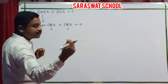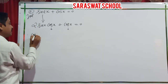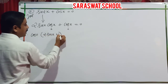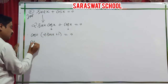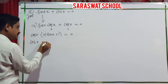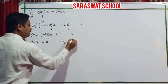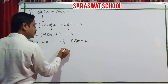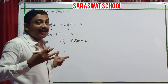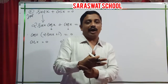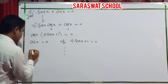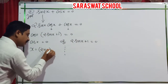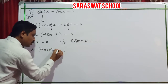Taking cos x as common: cos x times (2 sin x plus 1) equals 0. So cos x equals 0 — giving x equals (2n+1) pi by 2, n belongs to Z — or 2 sin x plus 1 equals 0, giving sin x equals minus half.